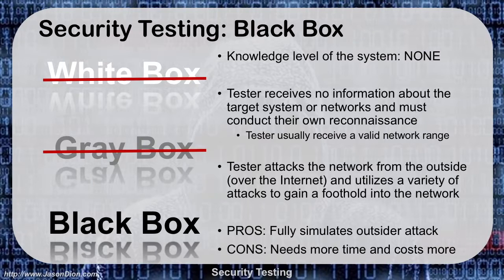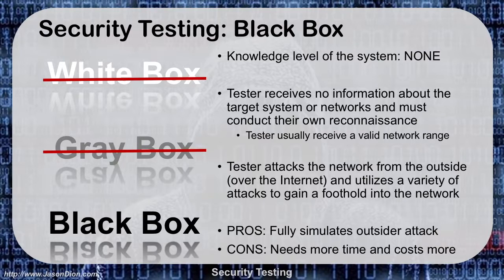The cons of black box are that it takes a lot of time and costs a lot more. If 80 to 90% of your time is in reconnaissance and you only have a three-month window, you might spend two and a half months figuring out where and how to attack, leaving only a couple of weeks for the actual attack. With white box, you get a lot more penetration and on-net access. Gray box tends to be a pretty good compromise, and that's what most people end up doing.